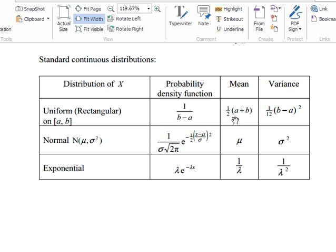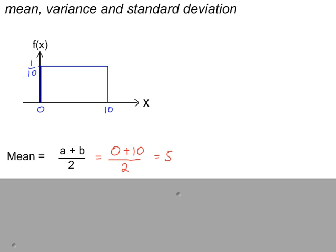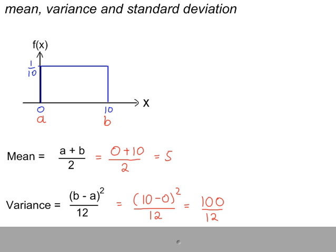Going back to the formula book, we have a formula for the mean and one for the variance. For the mean: a plus b divided by 2, so 0 plus 10 divided by 2 gives a mean of 5. For the variance: b minus a squared divided by 12, so 10 minus 0 squared divided by 12. We can square root the variance to get the standard deviation.